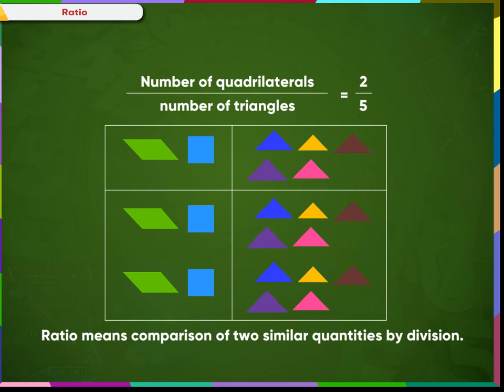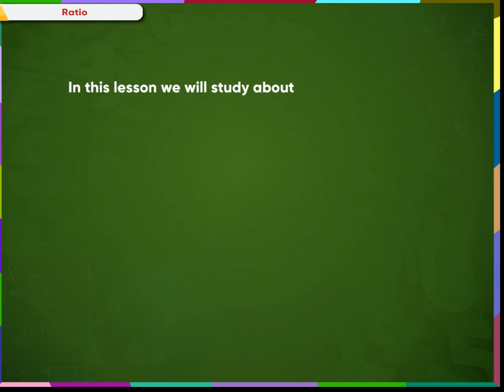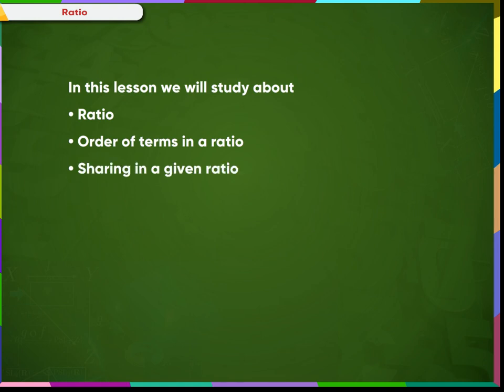We denote this ratio with a special symbol. So, 2 by 5 is written as 2 is to 5 and read as 2 is to 5. In this lesson, we will study more about ratio, order of terms in a ratio, and sharing in a given ratio.